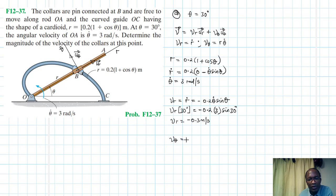V_θ equals r·θ̇, which equals 0.2(1 + cos θ)·θ̇, which is 3.